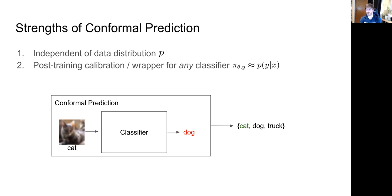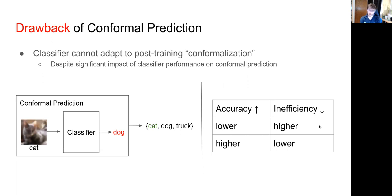The key strengths of conformal prediction are that it's independent of the data distribution and that it works as a wrapper around pre-trained models. However, treating the classifier as a black box is a big drawback. The classifier cannot really adapt to whatever conformity scores you use at conformization time, and classifier performance is not actually decoupled from conformal predictor performance. Higher accuracy results in lower inefficiency — so training the classifier appropriately matters significantly.